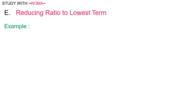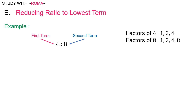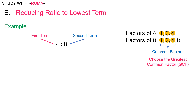Let's try another example: four is to eight. Do four and eight share any factor other than one? The factors of four are one, two, and four. The factors of eight are one, two, four, and eight. Two and four are common factors. In this case, we will choose the greatest common factor, which is four. Then we will divide the first term and second term by four. So four divided by four is to eight divided by four, which is equal to one is to two.